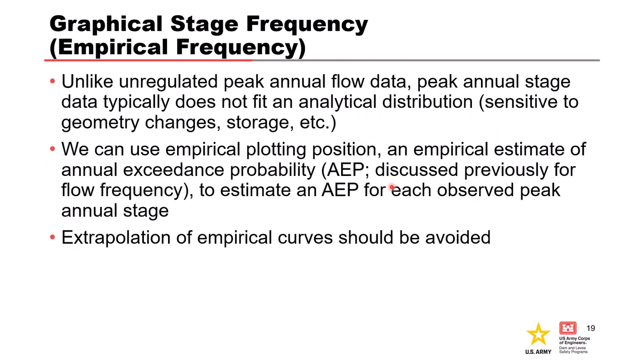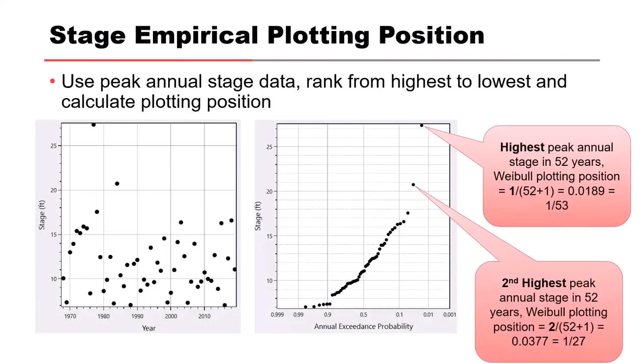Unlike unregulated peak annual flow data, peak annual stage data typically does not fit an analytical distribution because stages are sensitive to geometry changes, storage, and other factors in reservoirs or rivers. We can use empirical plotting positions — an empirical estimate of annual exceedance probability — to estimate an AEP for each observed peak annual stage. Extrapolation of empirical curves is dangerous and should be avoided; we typically only use analytical curves for extrapolation, which we don't do with stages. For stages, we're still plotting on the normal probability x-axis but using a linear y-axis for stage since it typically does not linearize with a log transform like flow does. We are not fitting a distribution through these points to extrapolate to higher stages or less frequent AEPs than what has been observed.